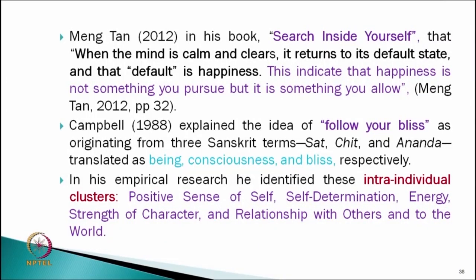Another work by Campbell in 1988 also focused on this. He borrowed the Indian religious concept of satchidanand and said: follow your bliss, and by following your bliss, you will be getting being, consciousness, and blissful level — the satchidanand level. He also identified some intra-individual clusters: positive sense of self, self-determination, energy, strength of character, and relationship with others and the world would create that level of happiness. By having these positive traits in our personality, we may follow our bliss or have the level of anand — satchidanand.